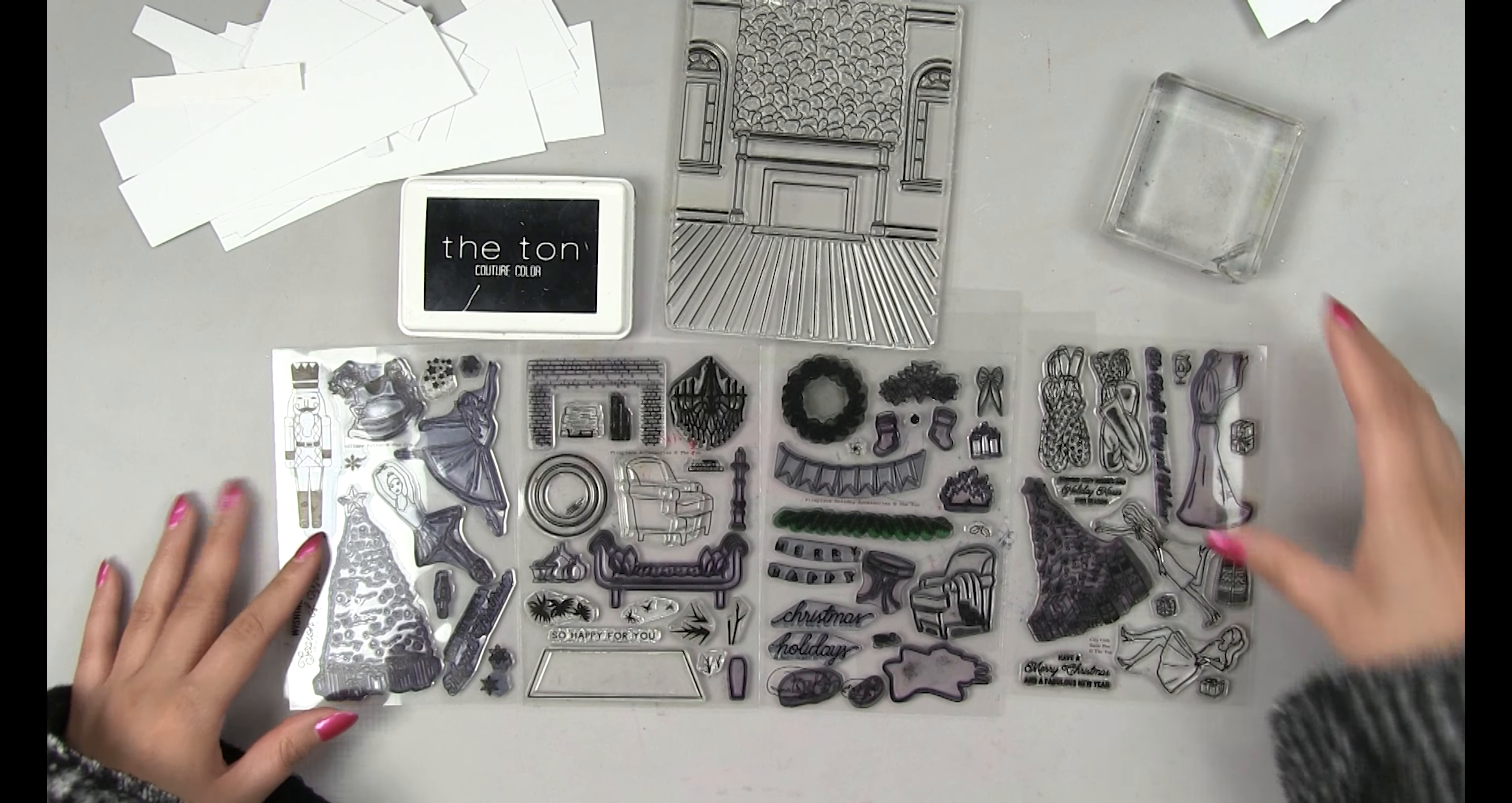I'm going to start pulling small image stamps from each of the sets and I'm going to lay them upon the fireplace background so that I can get a general idea of where I want to position things. I'm going to pull the tree stamp from the holiday ballet set. I also pulled the little nutcracker stamp and the rocking horse stamp and I actually don't use the rocking horse stamp in the final card.